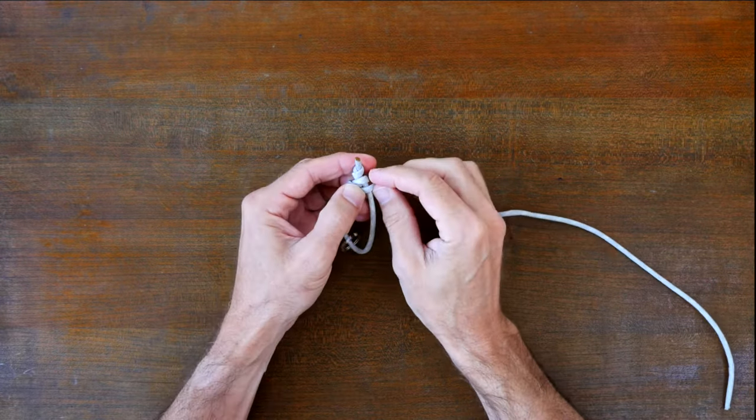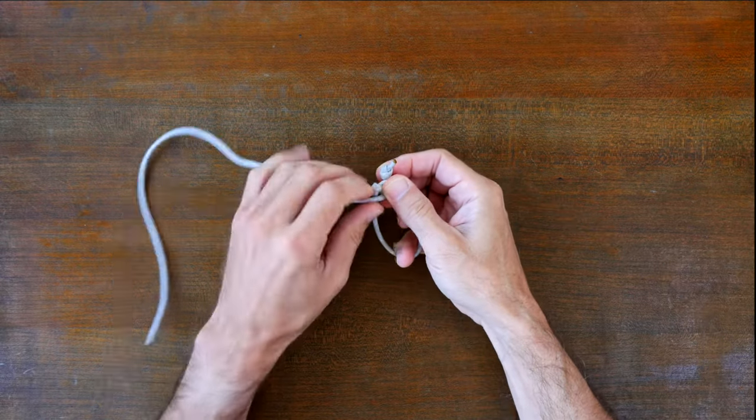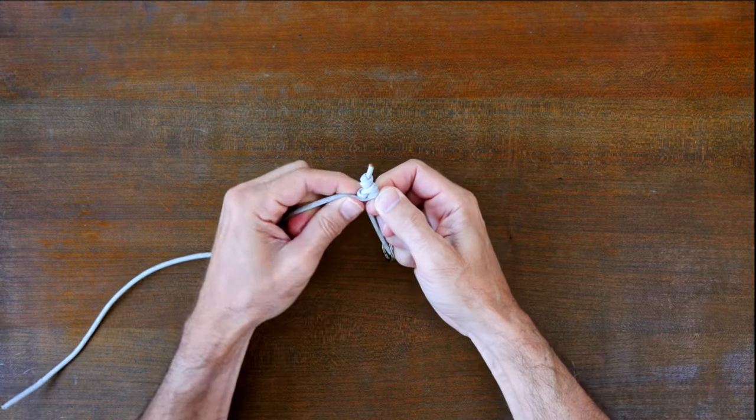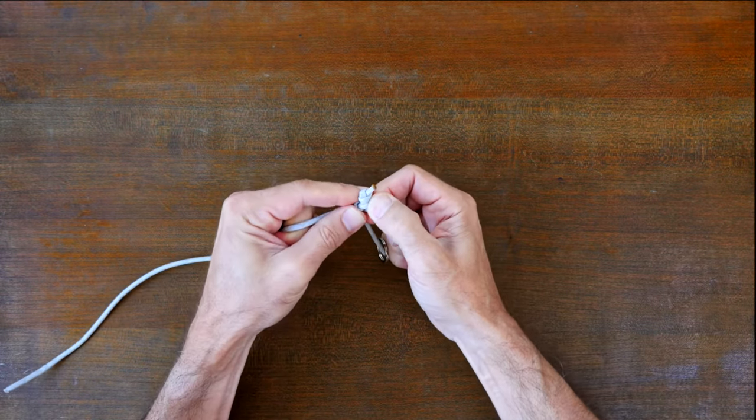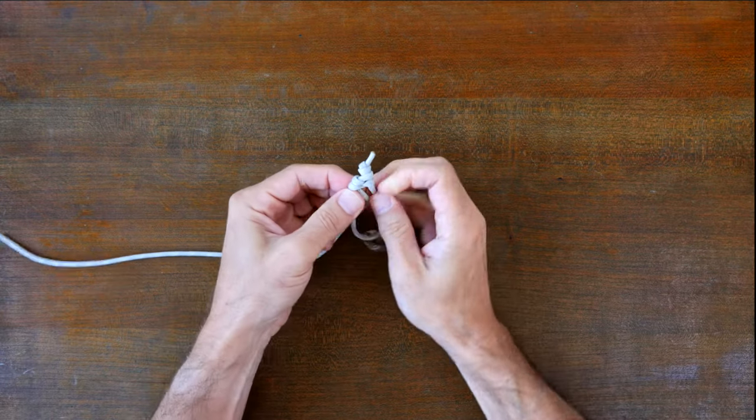Then around the right strand and then around the left strand, cinching the weave tight as you go. Continue to follow the simple weave all the way down to the end of your paracord keychain. You can see this is a very easy way to tie a paracord keychain.